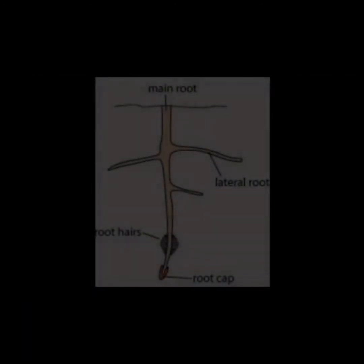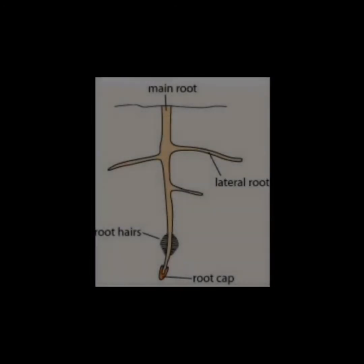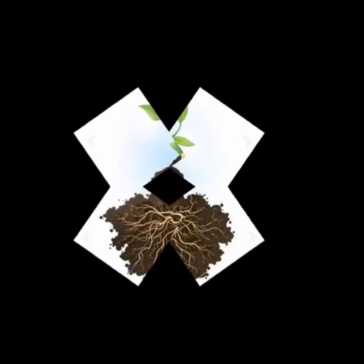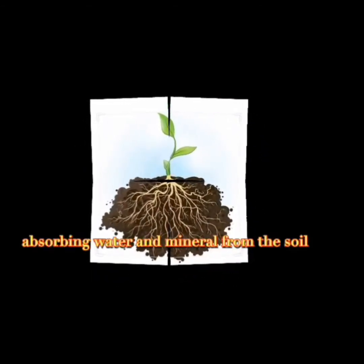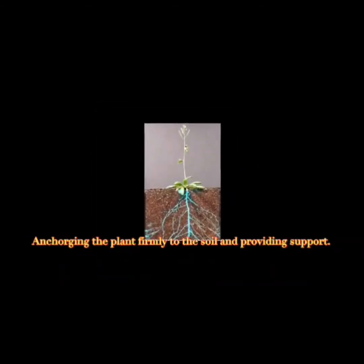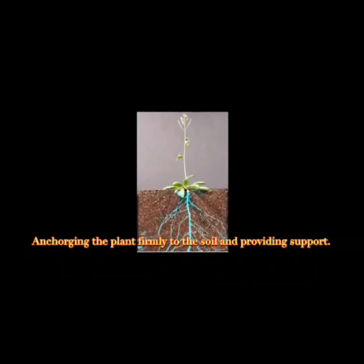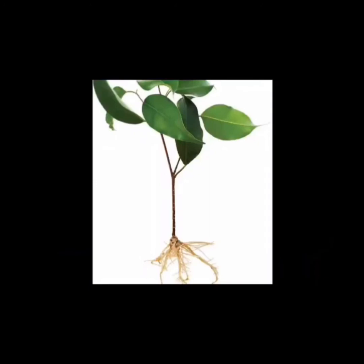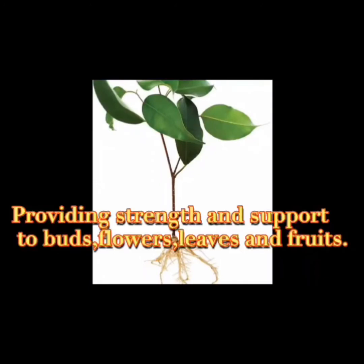The root exists under the soil. The top part of the root is covered by a covering known as the root cap. The functions of the root are: absorbing water and minerals from the soil, storing food for future use, anchoring the plant to the soil, and providing support.